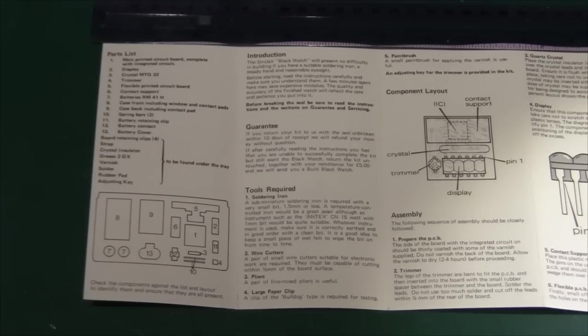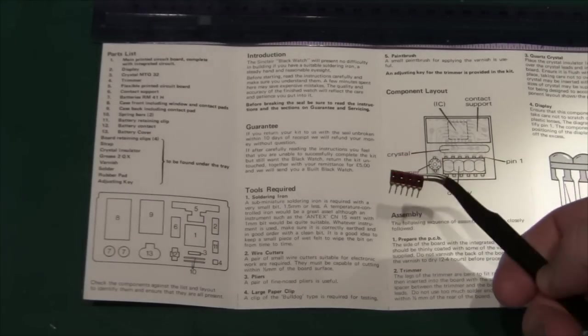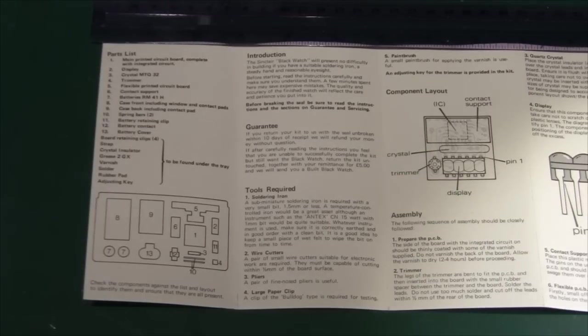Then you solder in the display. The display is the standard Sinclair one, the one he always uses, the little one with the magnifying glass built in to the plastic. This one here of course is four digits with a decimal point. And then it becomes really difficult.